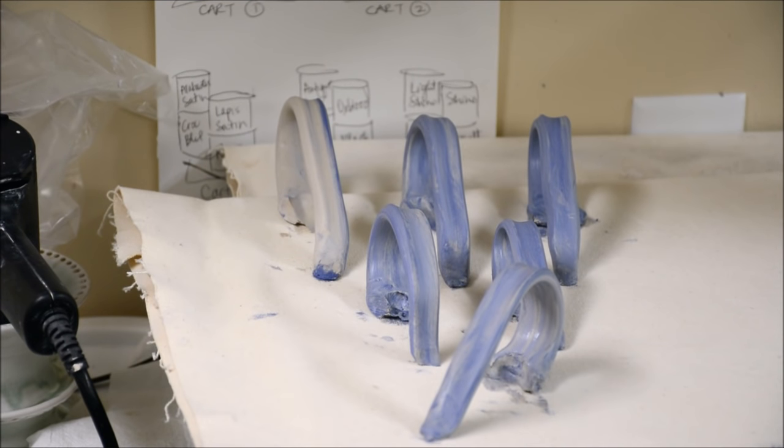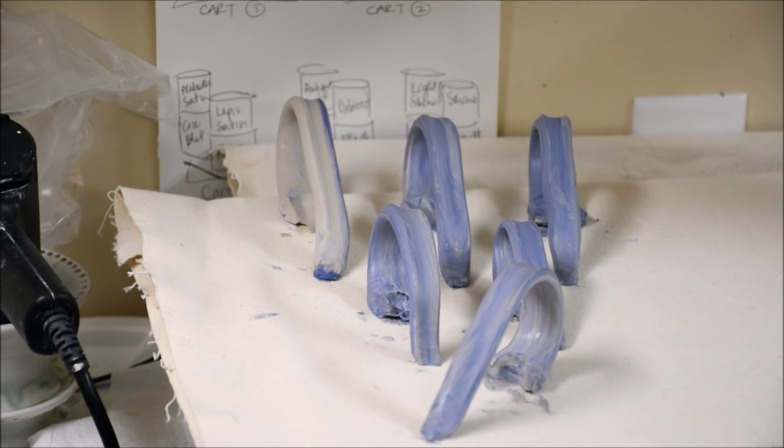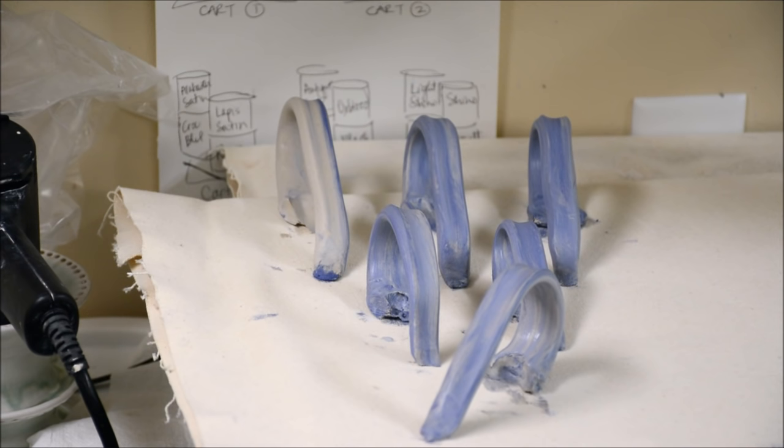And here are my finished handles that are drying to stiffen up a little bit. You can see some have a little bit more marbleization. I will clean the slip from the outside at the end.